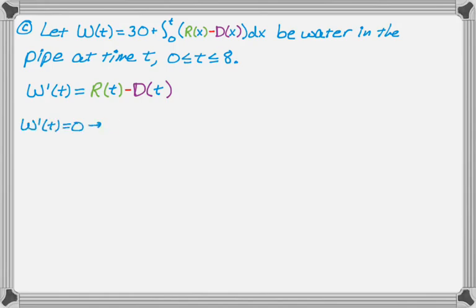So W prime of T equals zero. My calculator tells me that that happens at T equals zero and at T equals that value right there. So I did that by graphing and finding the zeros. I graphed R of X minus D of X and found the zeros between zero and eight. And then I'm going to store B using the calculator so that I can just plug in.